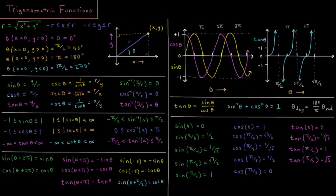There's also the cosine of theta, which is x divided by r — the length of the adjacent side of our right triangle divided by the hypotenuse length. And the tangent of the angle is opposite over adjacent, or y over x.